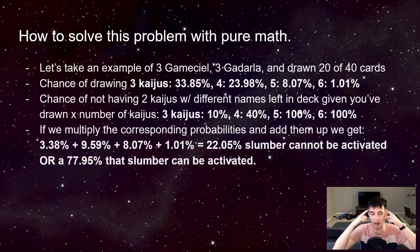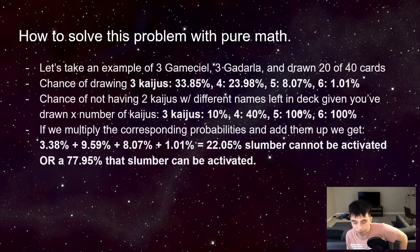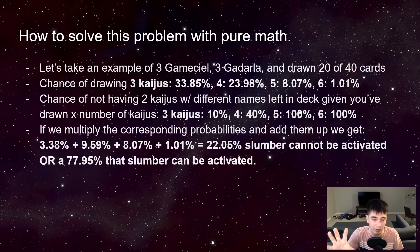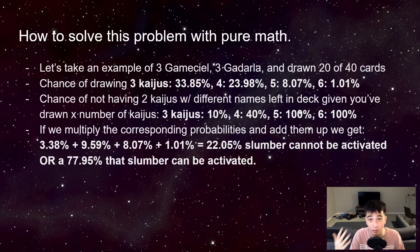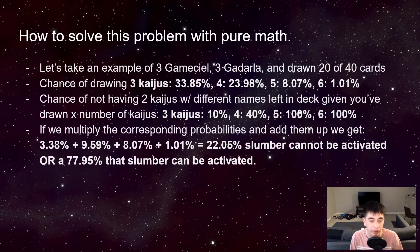We're going to put on our math caps here and try to calculate that. Don't worry, we're going to get to the program and the math. I just wanted to show you it is possible to calculate. So we take an example: we have three Gamma Seal, three Kadarla in our deck, and we've drawn 20 out of 40 cards.